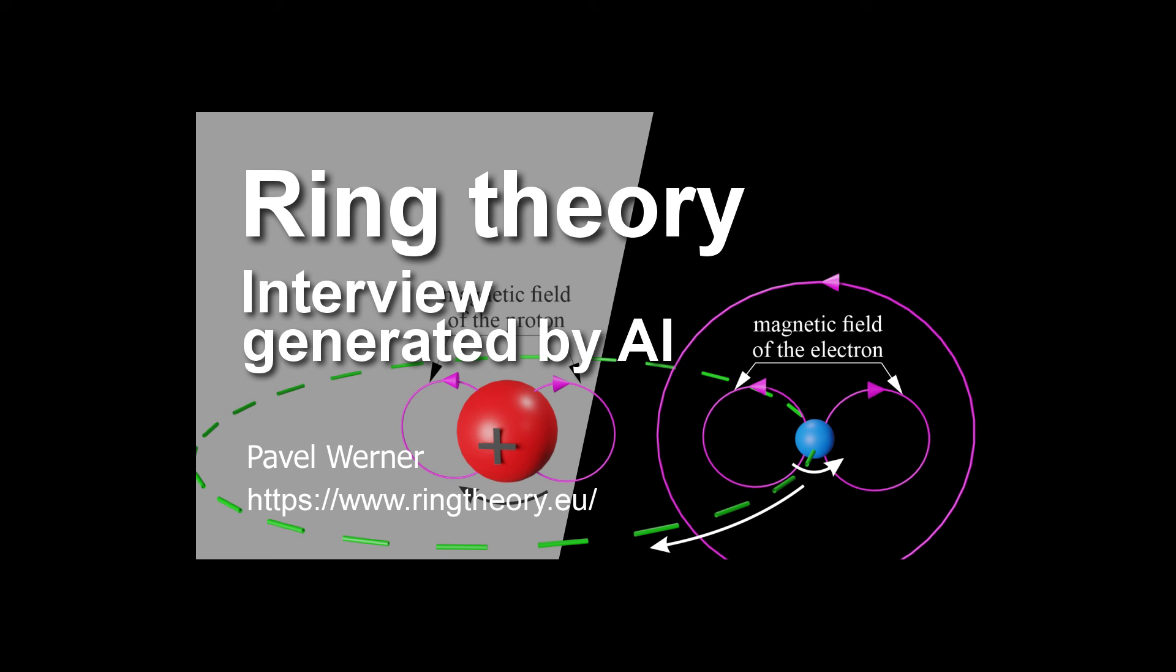But while we're on the topic of quantum mechanics, one thing that's always blown my mind is this concept of entanglement. Ah, yes. Quantum entanglement, where two particles become linked no matter how far apart they are, so that measuring the state of one instantly influences the state of the other. It's like they have this spooky, invisible connection that transcends space and time. It is one of the strangest and most counterintuitive aspects of quantum mechanics. And you know what? Ring theory might actually be able to shed some light on that as well. Really? Okay, now you've piqued my interest. Tell me more.